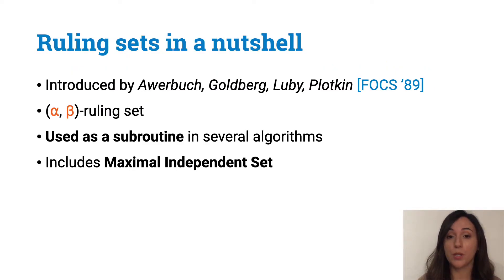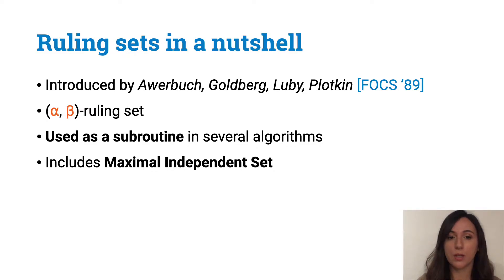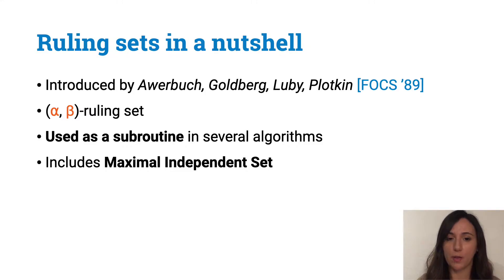So what is this problem for which we show a lower bound, and why do we care about it? Ruling sets in the distributed setting were introduced by Auerbuch, Goldberg, Luby and Plotkin in a paper from 1989. Informally speaking, it is a family of problems described by two parameters, alpha and beta. This paper used ruling sets as a subroutine for distributedly decomposing a network into connected components of small diameter.